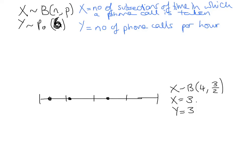But this might not always be the case. What if this phone call had come in a minute earlier and was actually in a different interval — then my x would now be 2. There are only 2 sub-periods of time in which I had a success, in which I had a phone call. Whereas y is still 3.